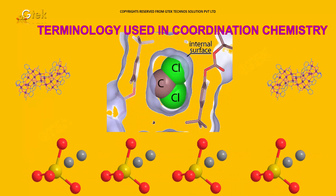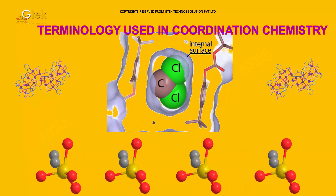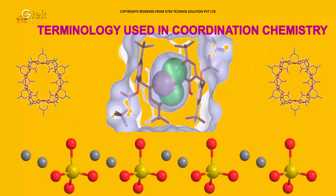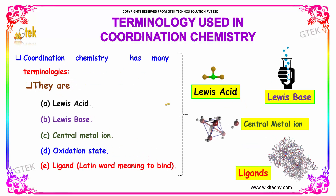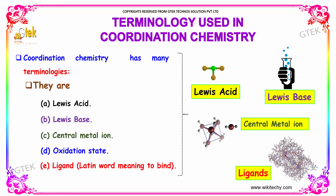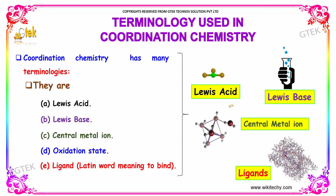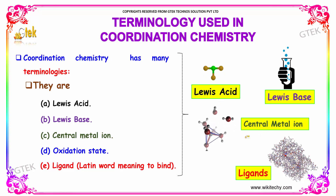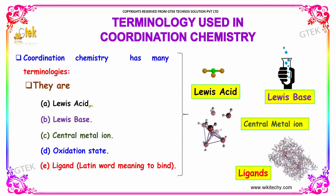Here is the terminology used in coordination chemistry. These are the important terminologies in coordination chemistry: the first one is Lewis acid, Lewis base, what is central metal ion, the oxidation states, and ligands.